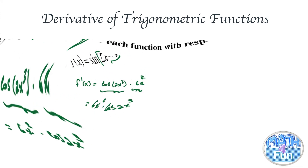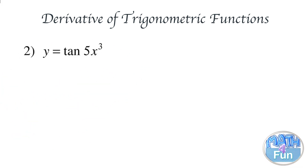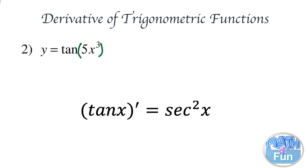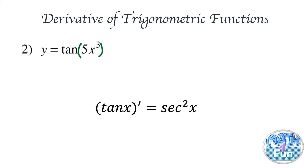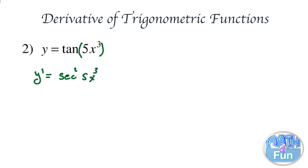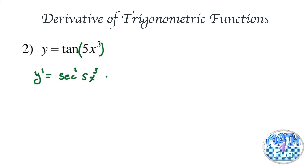Here we have y equal to tangent of 5x cubed. We keep 5x cubed in brackets to know it is the angle of the tangent. The derivative of tangent is secant squared. So y prime is going to be equal to secant squared of 5x to the power 3, multiplied by the derivative of the inside. The derivative of 5x cubed is 15x squared.